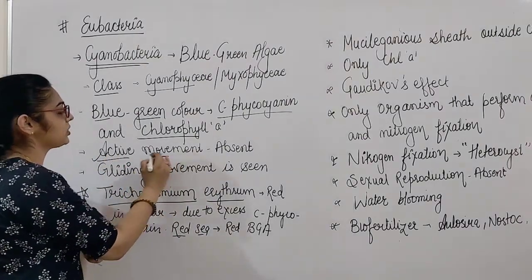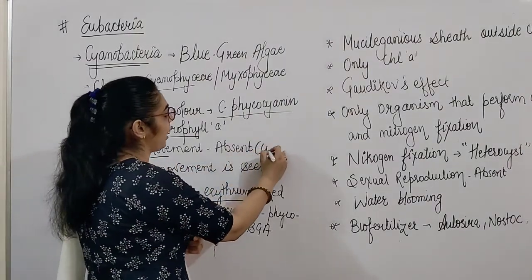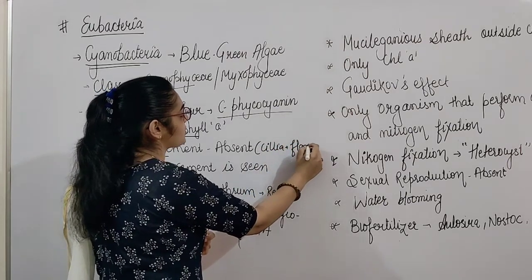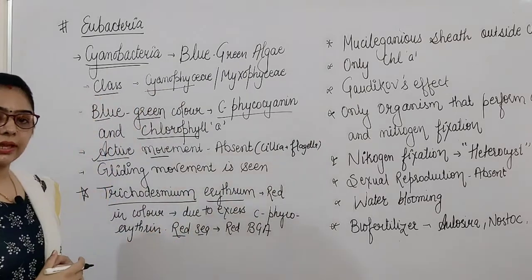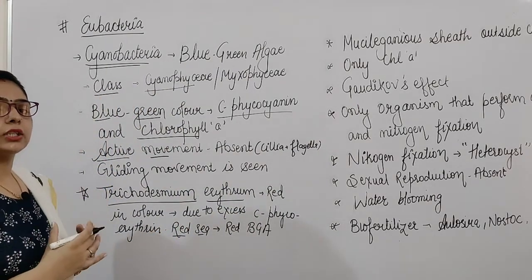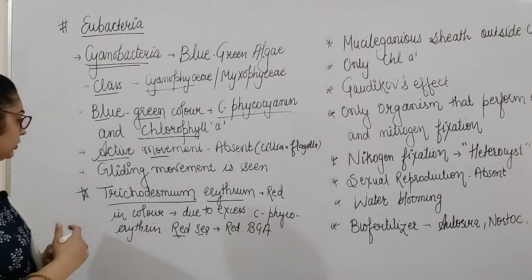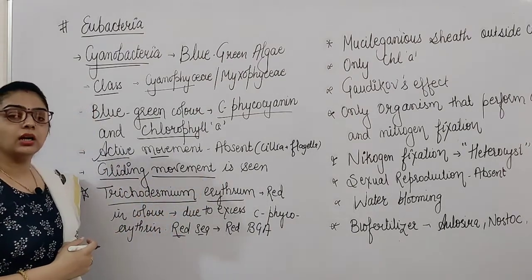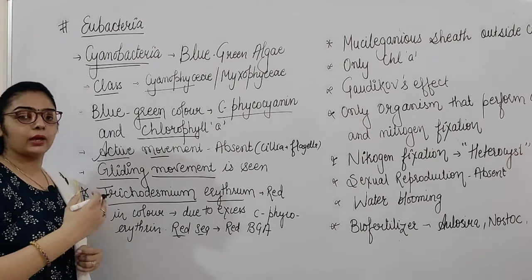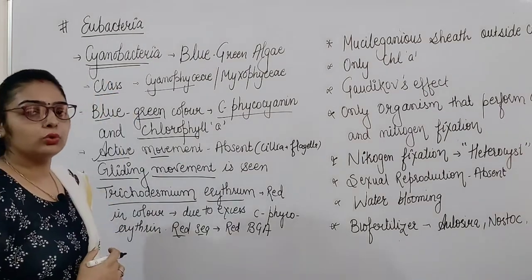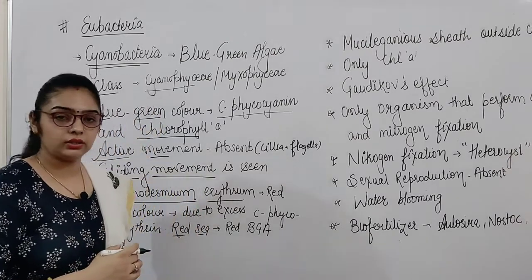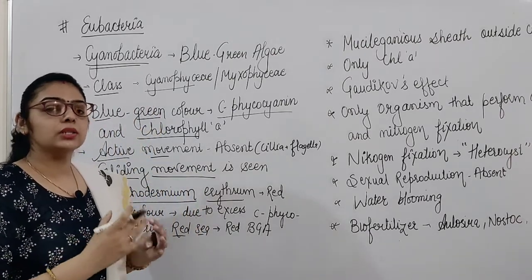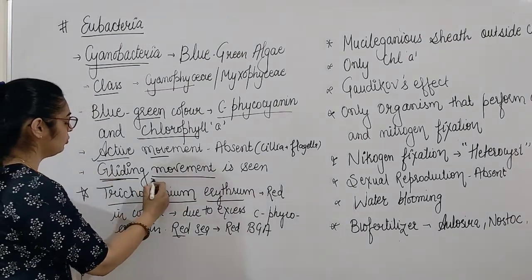Active movement is absent in cyanobacteria. It does not have cilia and flagella. So the active movement is not present in cyanobacteria. How does it move then? That is the gliding movement — it moves along with the water currents, the water waves. We call this gliding movement.